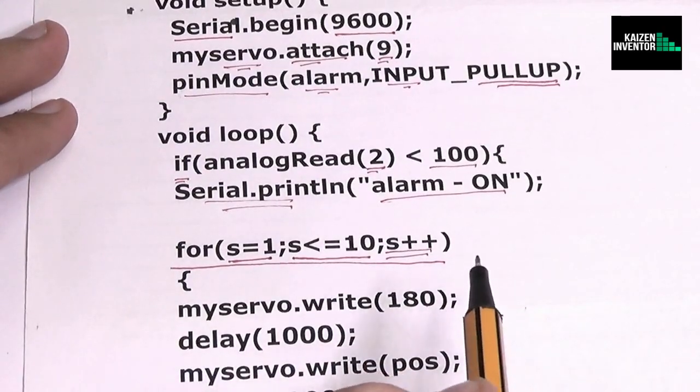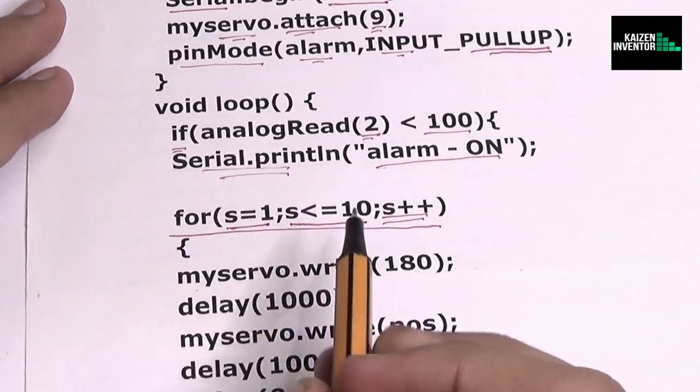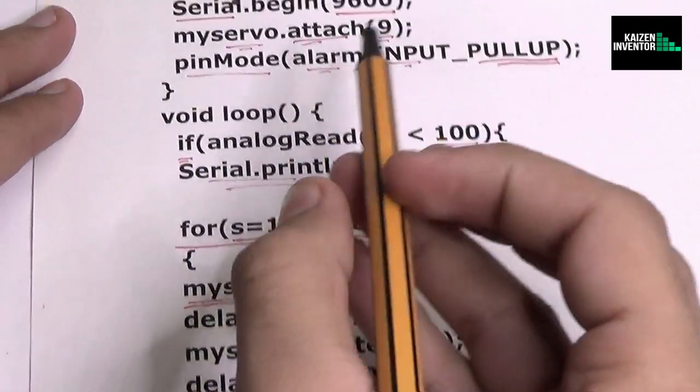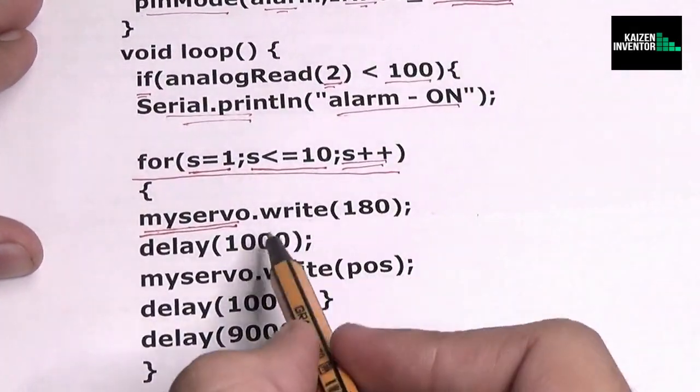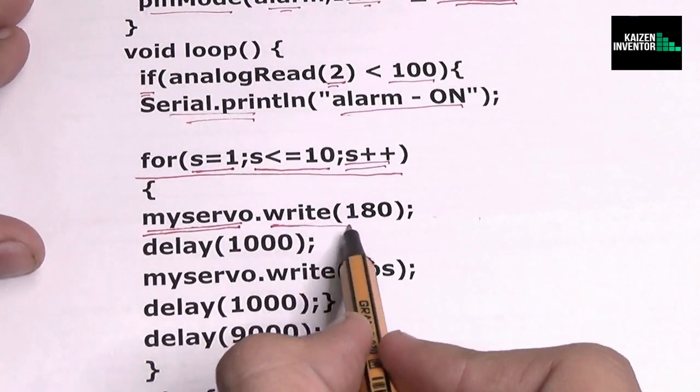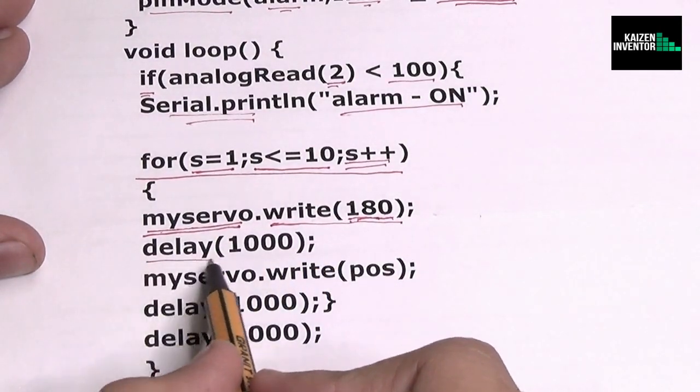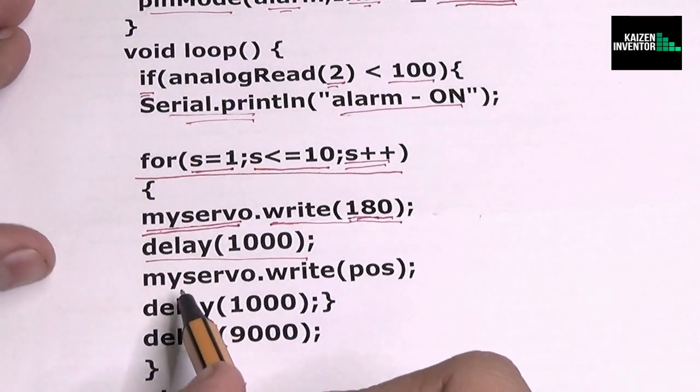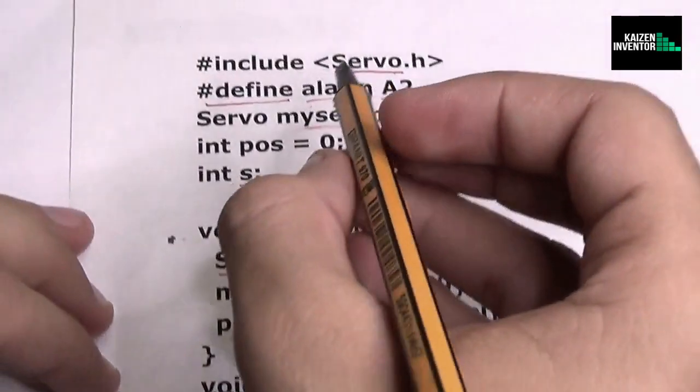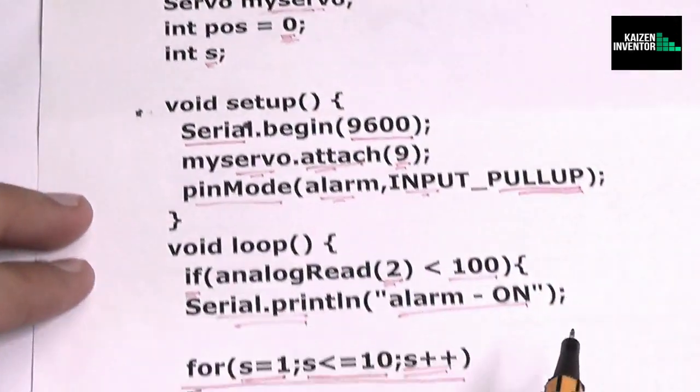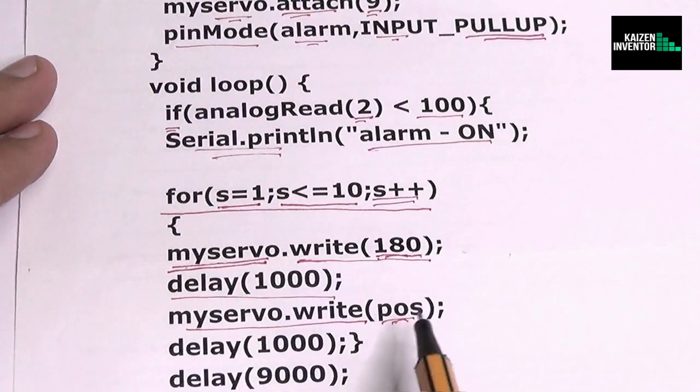So in the for statement I have mentioned the command myservo which is the name of the servo which we have defined in the starting of the program, and write function which means to make the movement of the servo leg to the 180 degree position from 0 to 180 degree. Then we would include a delay for the servo and then we would state that again make a movement of the servo to the degree pos, and we have defined pos as zero degrees. Now you can always take the pos value as zero and write it directly but I thought it would be nice if we mentioned this.